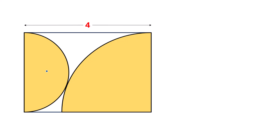We have to find the area of the yellow region. Consider the centre of the yellow circle is this point and the radius of this small circle is a. So this will also be a, meaning the width of this rectangle is a plus a, that is 2a. So the radius of this large circle will also be 2a.